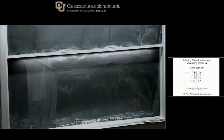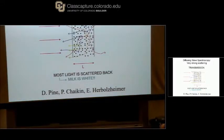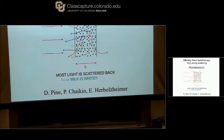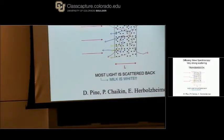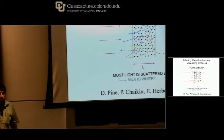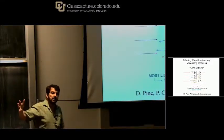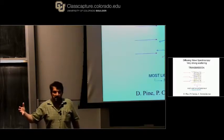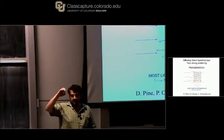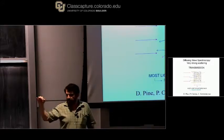Another technique developed in the 1980s: diffusing wave spectroscopy. The realization is that modern colloids are index-matched — made with materials that have exactly the same index of refraction as the solvent, so the degree of scattering is relatively low and you can see right through the system. A good system to think about for normal colloidal scattering is milk. Why is milk white?